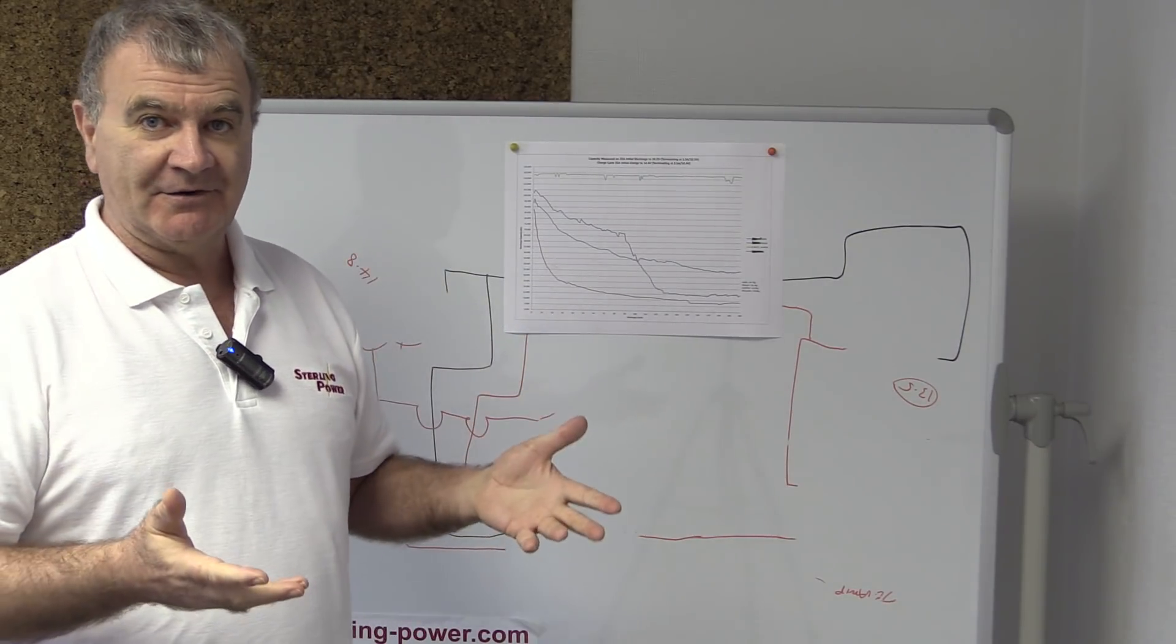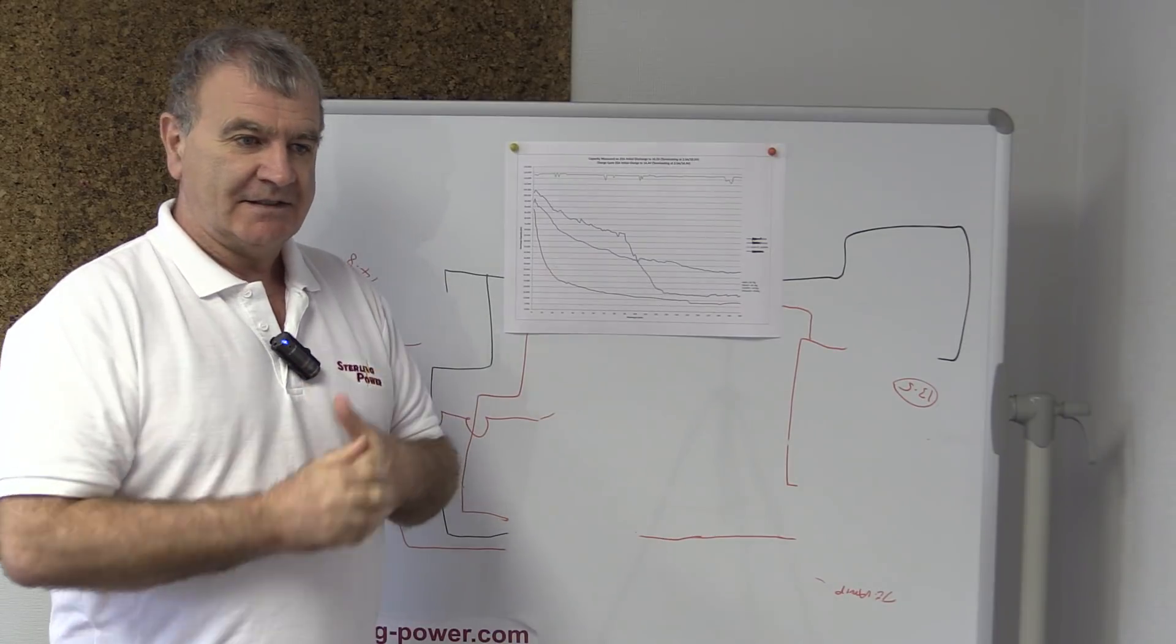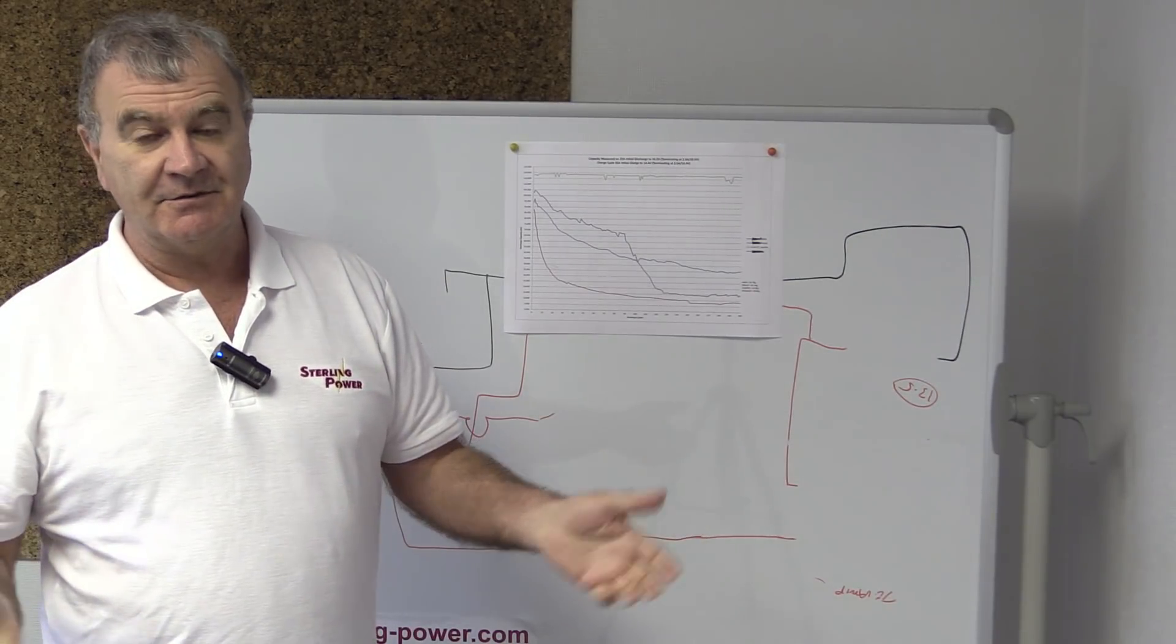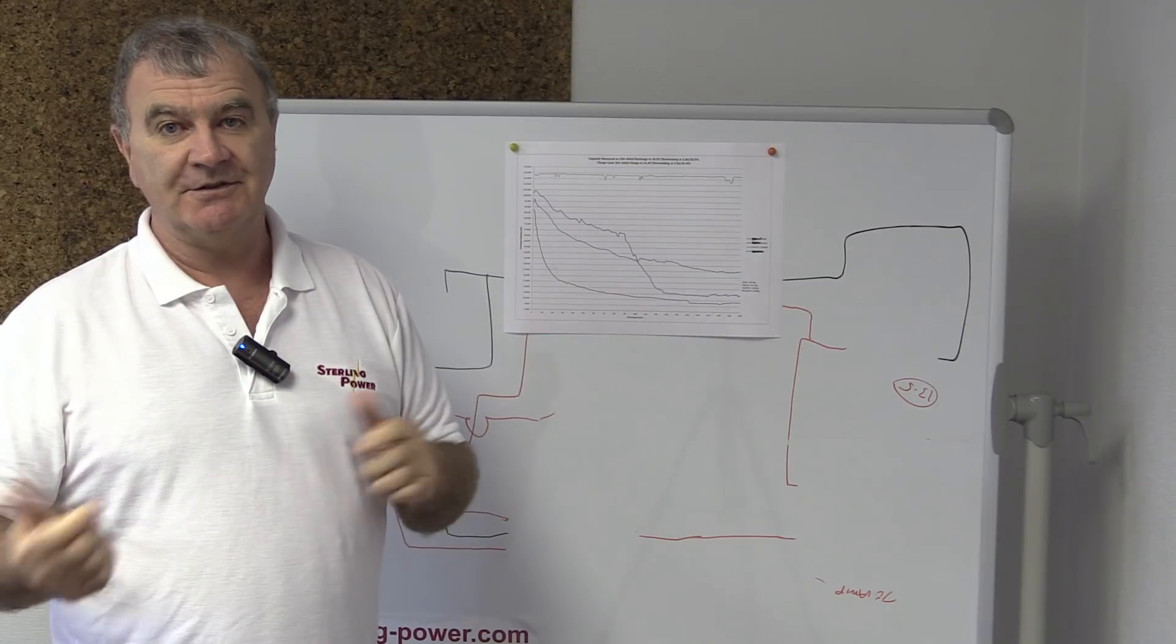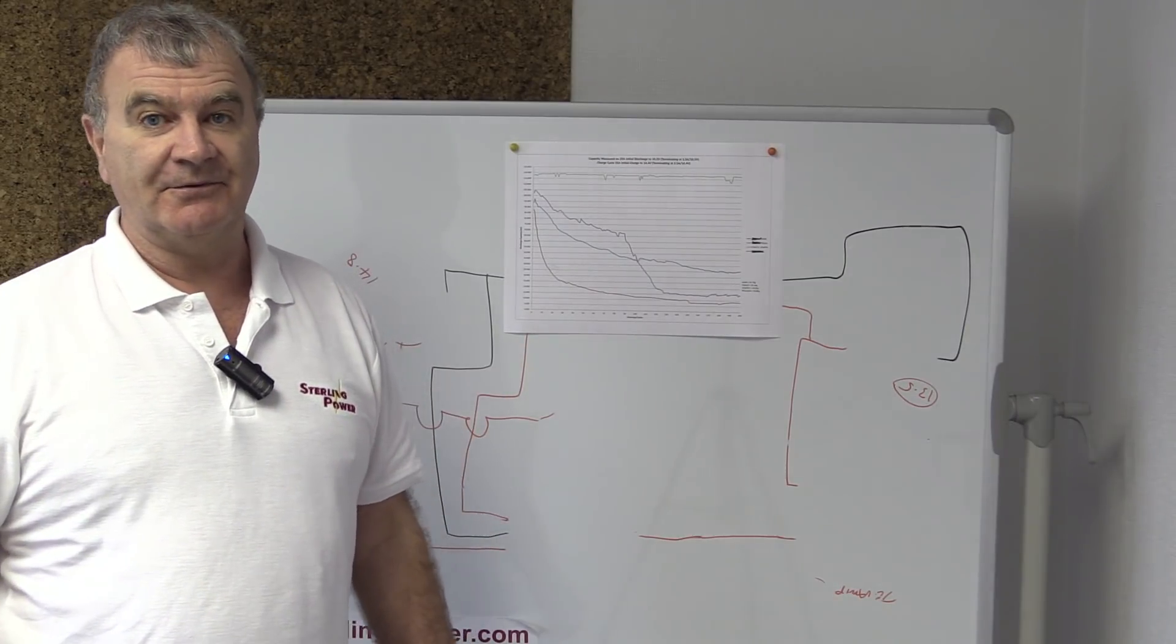There's no point taking a car starter battery and saying the cycle on this is 5,000 cycles, which it is. If you start your car with it, stop your car, start your car, it'll do 5,000 cycles, not unrealistically.